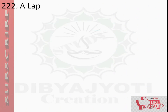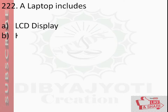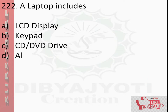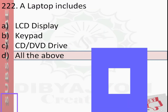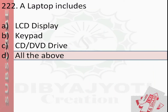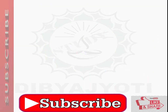Question number 222: A laptop includes — option A LCD display, option B keyboard, option C CD or DVD drive, option D all of the above. Answer is option D, all of the above.